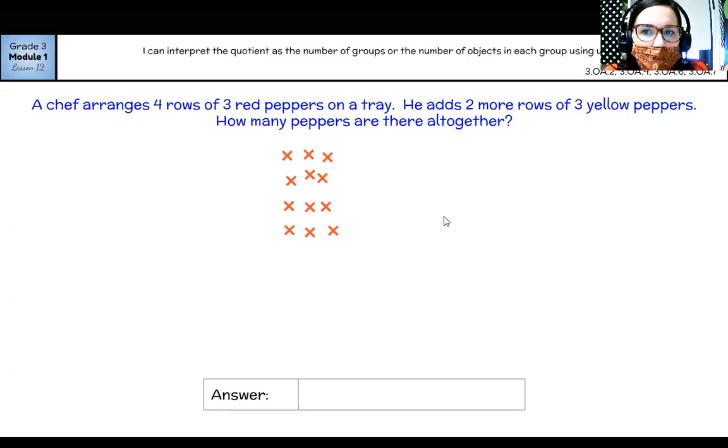And he adds two more rows of three yellow peppers. So I'll change my stamps because it's a different color pepper. One, two more rows of yellow. How many peppers are there all together? Okay. So here's what we want to be thinking about.